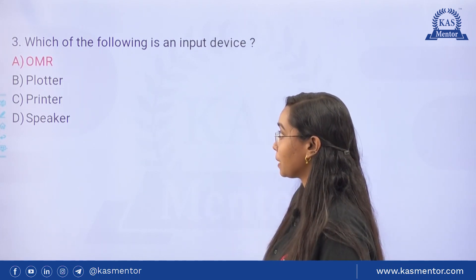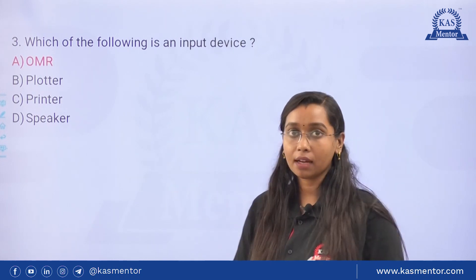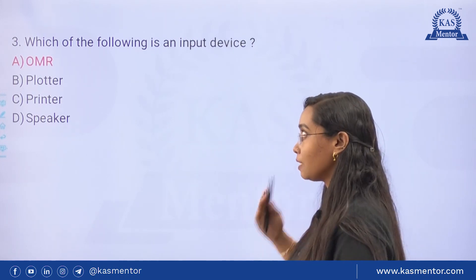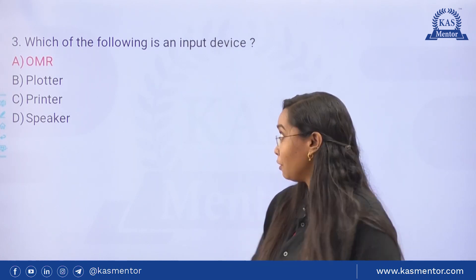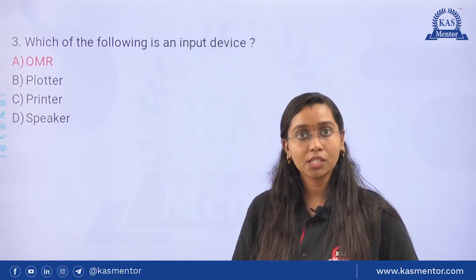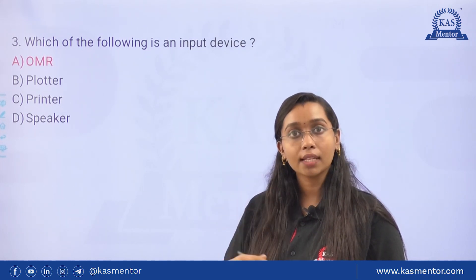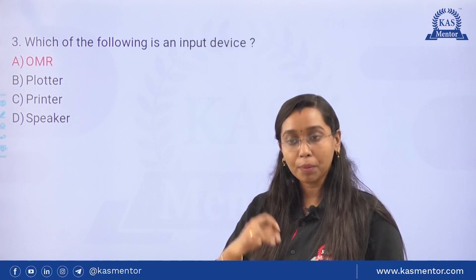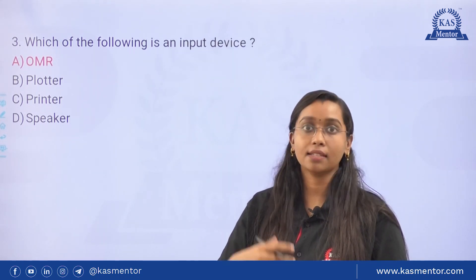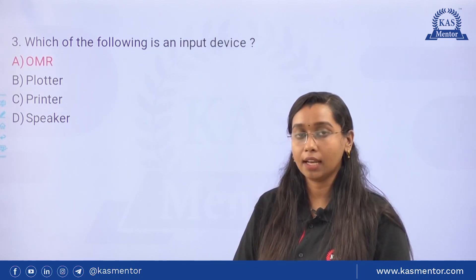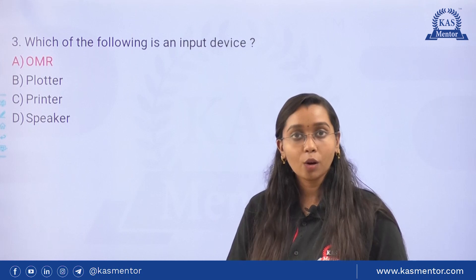Option A is OMR, Option B is Plotter, Option C is Printer, and Option D is Speaker. The Plotter and Speaker are not input devices. OMR is an input device — we use OMR sheets to input data, reading the card to access OMR sheets as an input device.